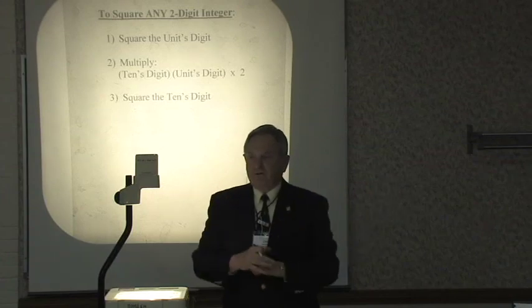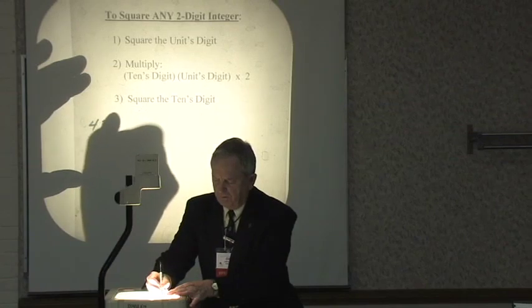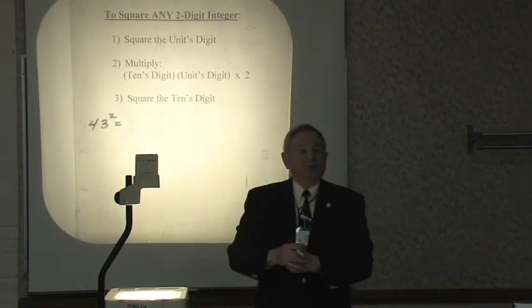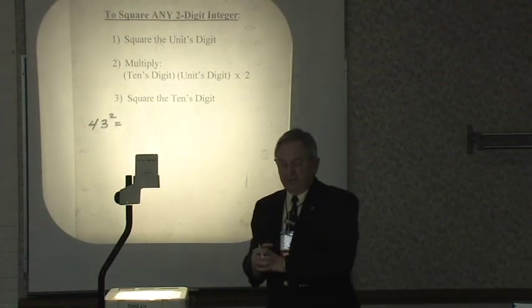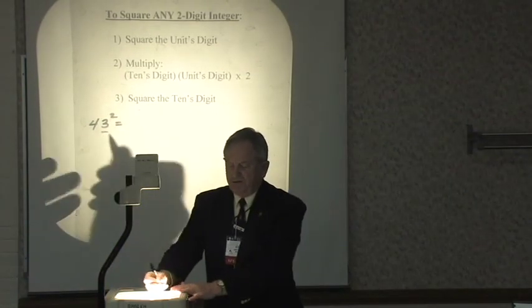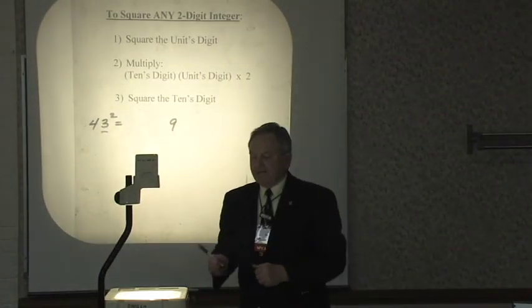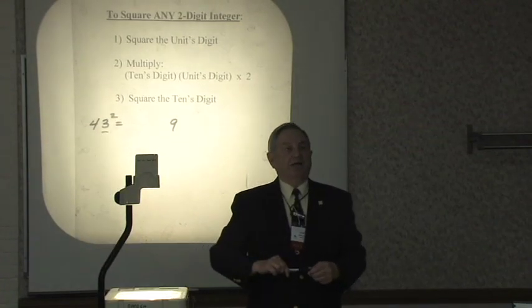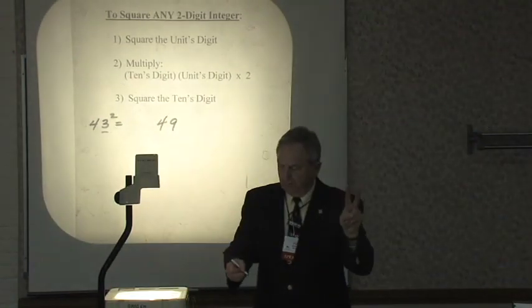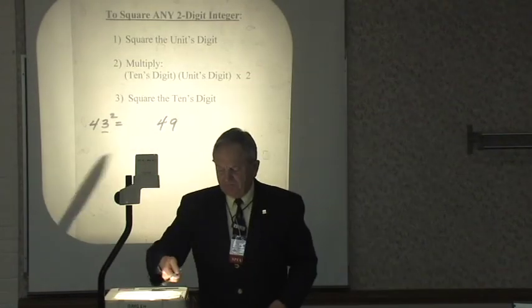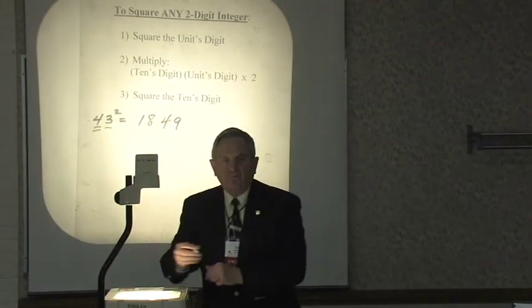Now, if we relate that to a specific example, it will become very clear. Let's pick a number. Let's do an easy one first. Let's pick 43. We want to square 43. Now, when we finish with step one, we're going to have the digit of the answer that's furthest to the right. In other words, the units digit. Here's what I mean. Square the units digit. Well, here's the units digit, 3. 3 squared is 9. That's going to be the far right digit. Next, multiply the tens digit times the units digit times 2. 4 times 3 is 12. Times 2 is 24. 24. Write down to 4. Carry the 2. Last step, square the tens digit. When I square the 4, I get 16. And the 2 I carry is 18. 1849. I'm finished.